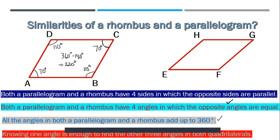The same goes for the rhombus. In rhombus EFGH, let's say the angle at vertex F is 135 degrees. Since opposite angles are equal, the angle at vertex H is also 135 degrees. For the angle at vertex E: since angles between parallel sides are supplementary, 180 minus 135 equals 45 degrees. The opposite angle at vertex G must therefore also be 45 degrees. So knowing one angle is enough to find the other three.